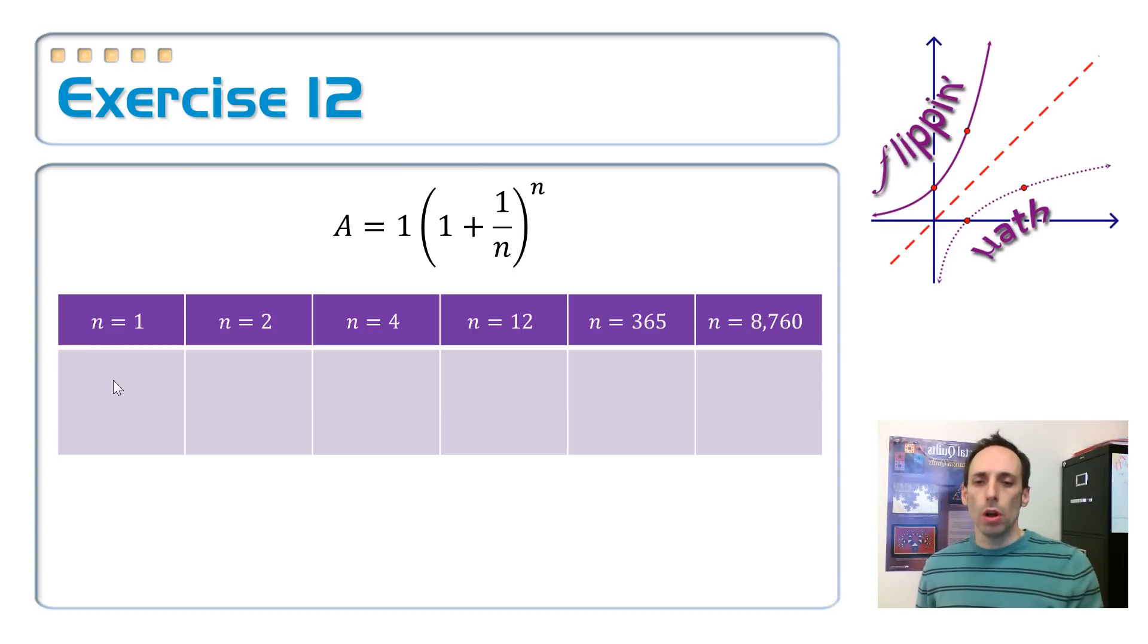So if I compound this once, let's say I put one in there, so that's one over one, that's two. Two to the first power is two times one. I just got two dollars. I doubled my money. That's pretty nice. That makes sense.